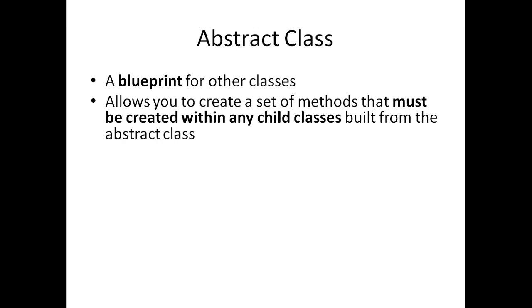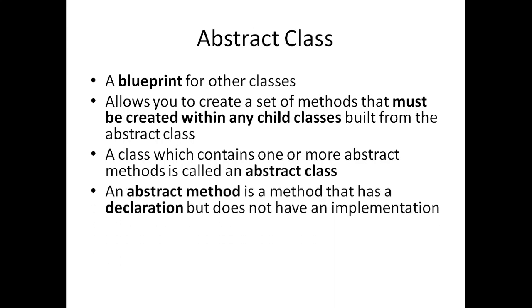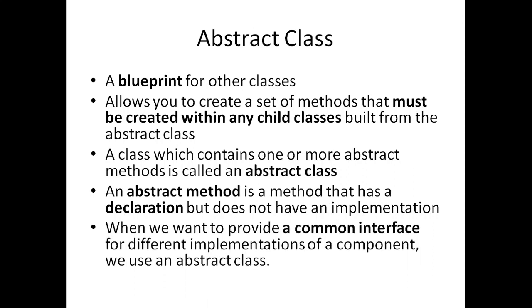If we create child classes from the abstract class, then all those classes should contain these methods. A class which contains one or more abstract methods is called an abstract class. An abstract method is a method that has a declaration but does not have an implementation. The implementation part will be in the child classes. We use abstract class when we want to provide a common interface for different implementations of a component.